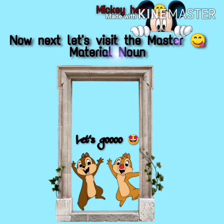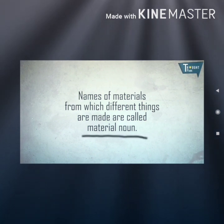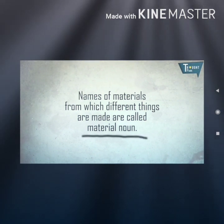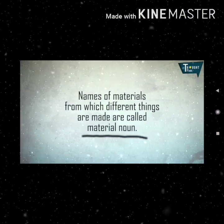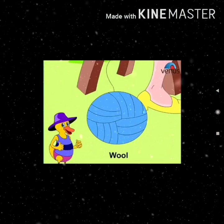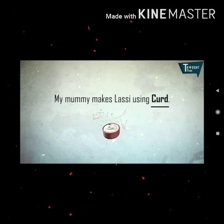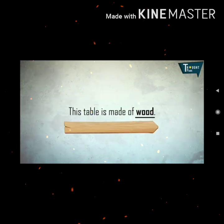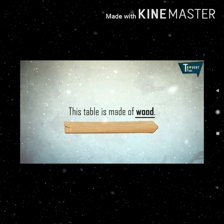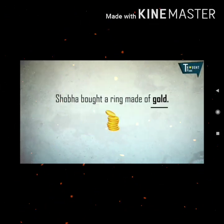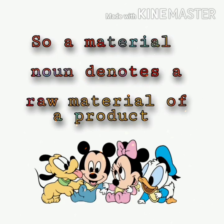Now let us visit the material noun. Names of materials from which different things are made are called material nouns. Examples: wool, gold, wheat. Some example sentences: my mummy makes lassi using curd. This table is made of wood. Shoba bought a ring made of gold. So, a material noun denotes a raw material of a product.